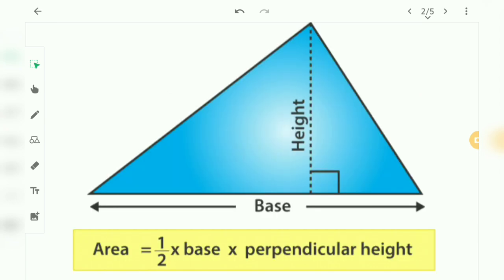So the first thing is the formula of the area of triangle. The area of triangle, the formula is 1 by 2, it is base into perpendicular height. So if the 1 by 2 is confusing, let me tell you, the first thing you need to do is multiply the base and the height.